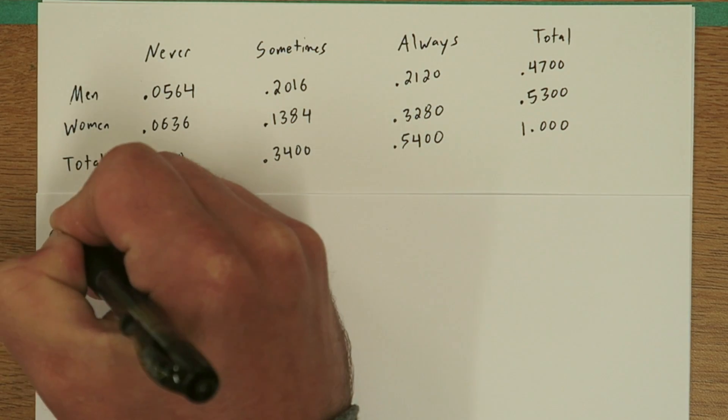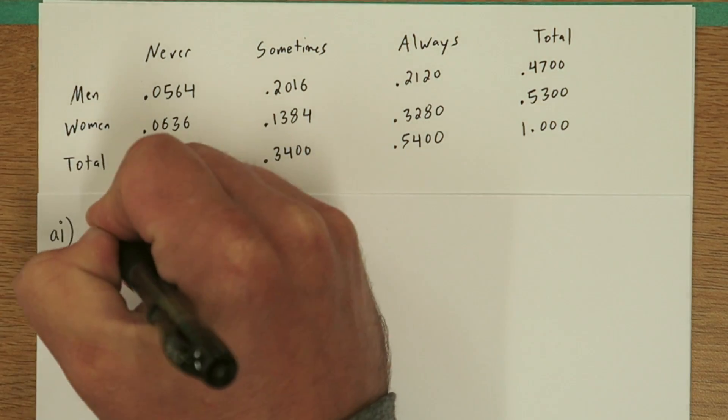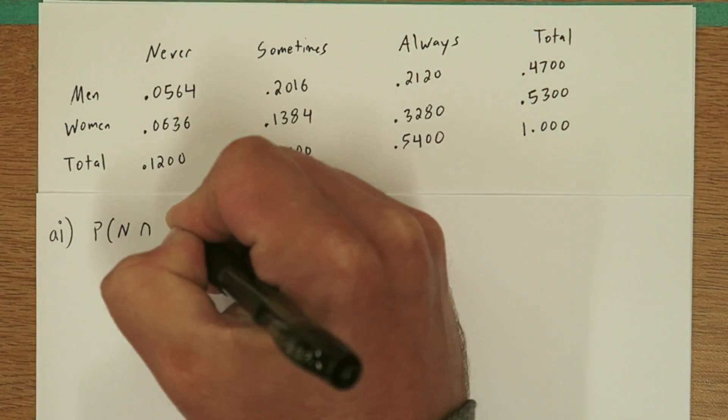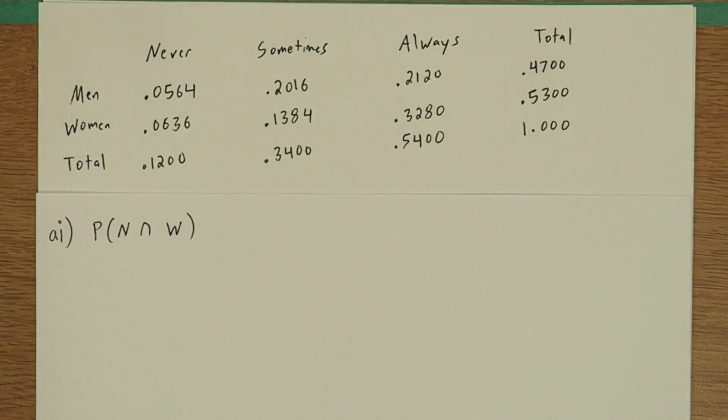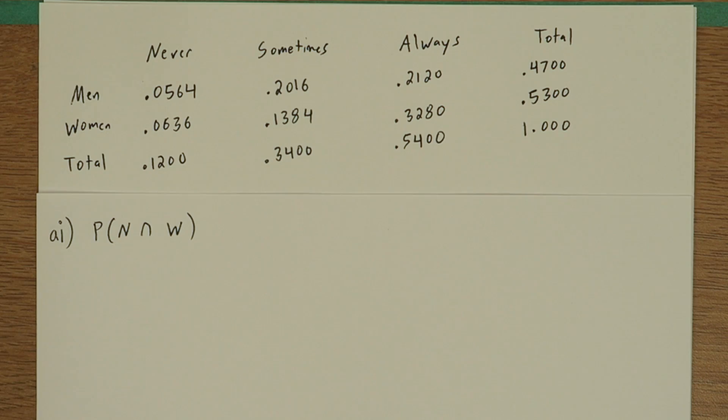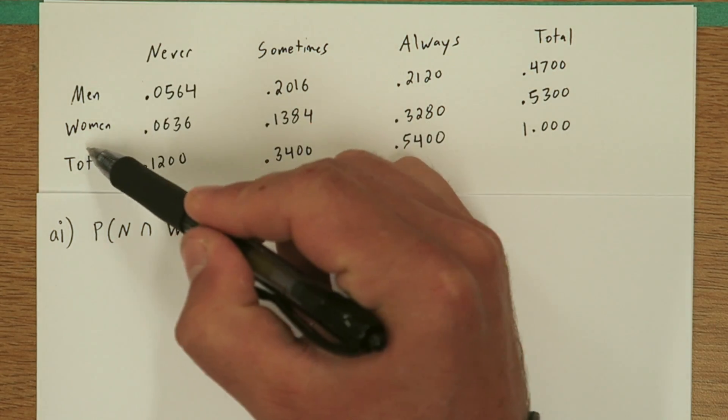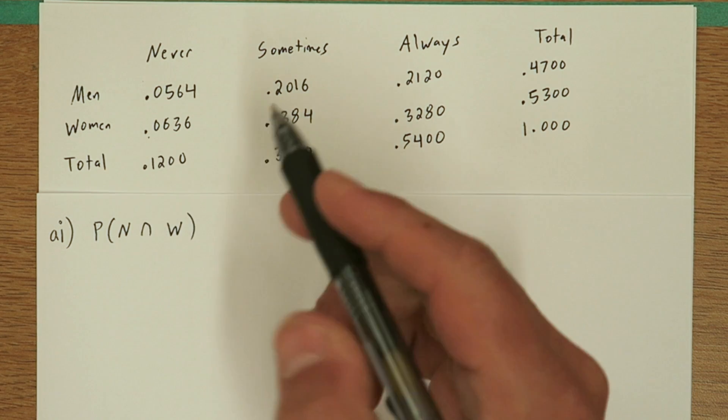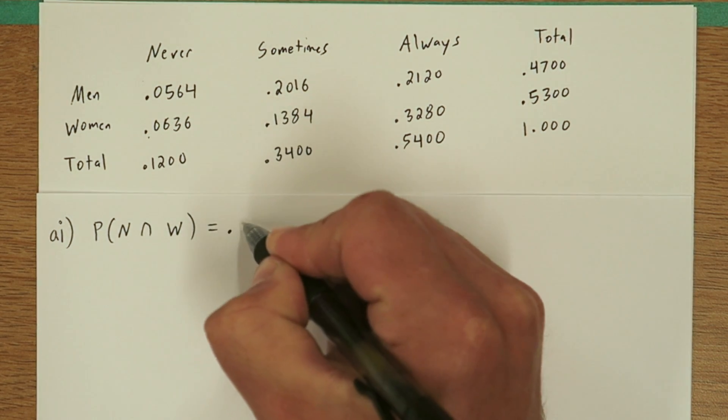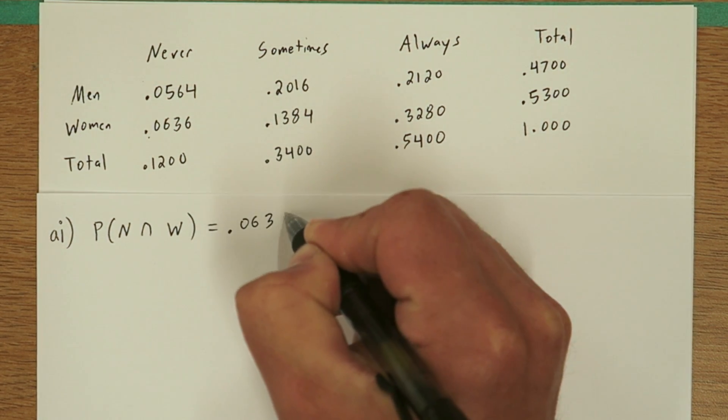On question 3, we're given this table and asked a few probability problems. The first one is, what's the probability of randomly selecting a person who never takes their medication that's prescribed and is a woman? Looking in this table, if we just go to the never column and also to woman, we can see the probability that we need right there, .0636.